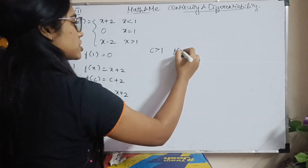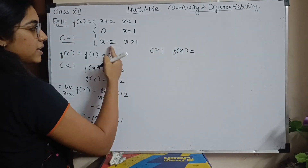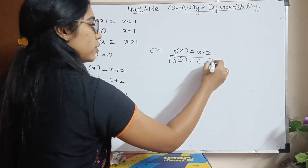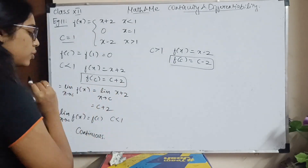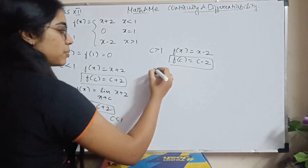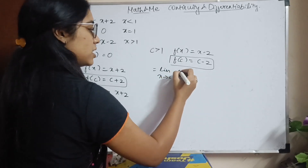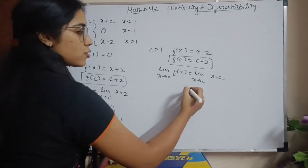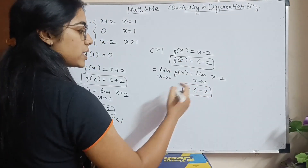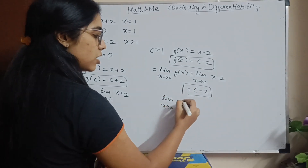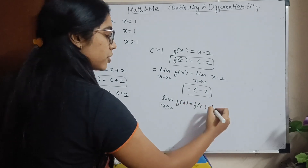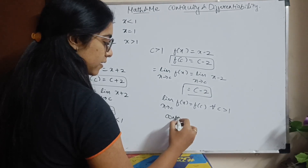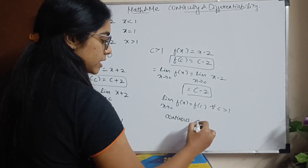If c is greater than 1, similar condition. The one and only f of x for x greater than 1 is x minus 2. So f of c is going to be c minus 2. The limit x tends to c of f of x is going to be limit x tends to c of x minus 2. Substituting c, I'll have c minus 2. So limit x tends to c of f of x equals f of c for all values when c is greater than 1. This is continuous.